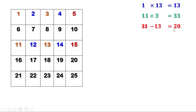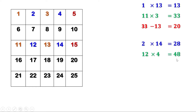The difference is 33 minus 13, which is 20. Now let us take another square of nine numbers: 2, 3, 4, 7, 8, 9, 12, 13, 14. The numbers at the corners are 2, 4, 12, and 14. The diagonal products are: 2 into 14 is 28, and 12 into 4 is 48. The difference between them is 20.